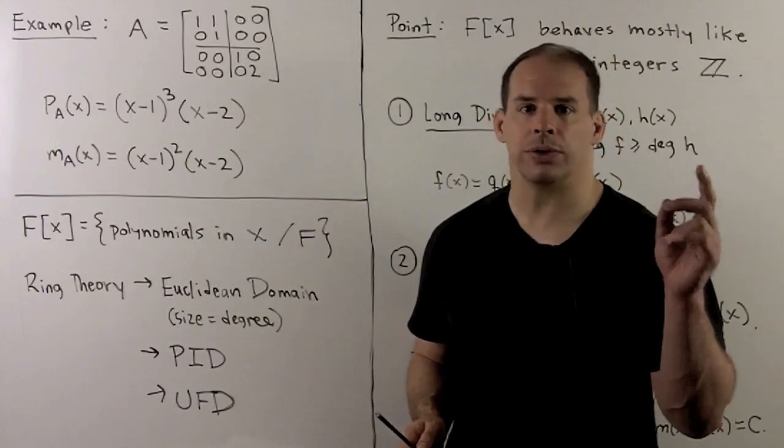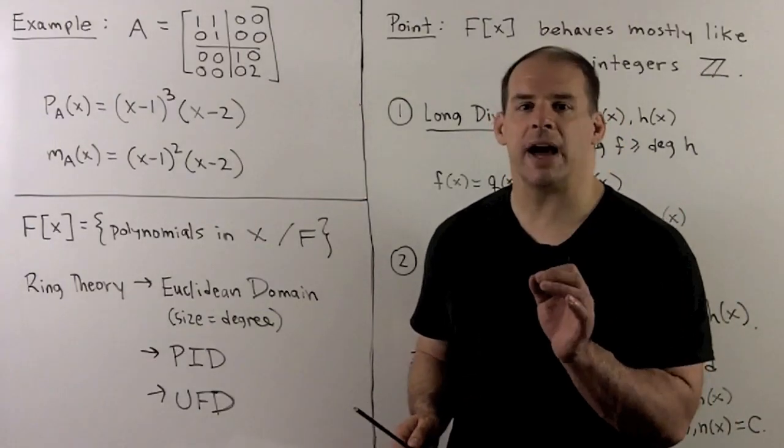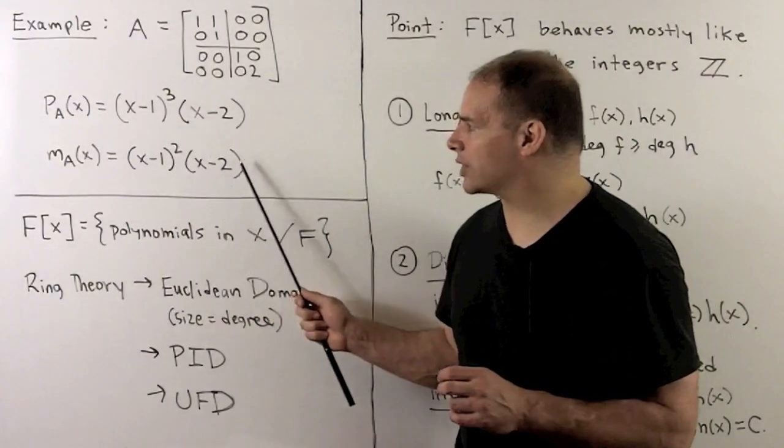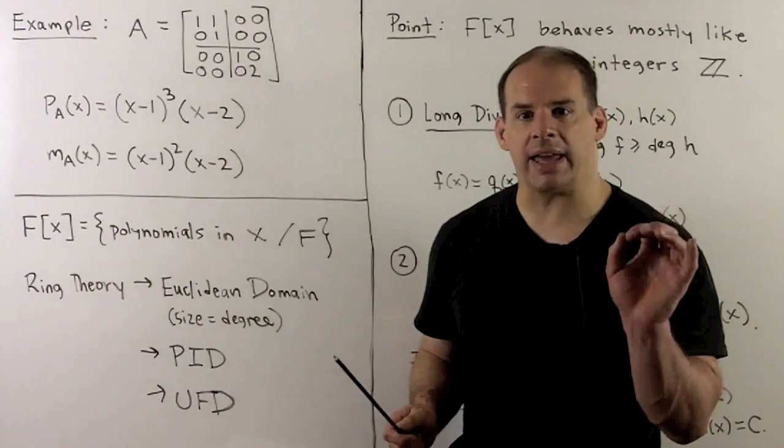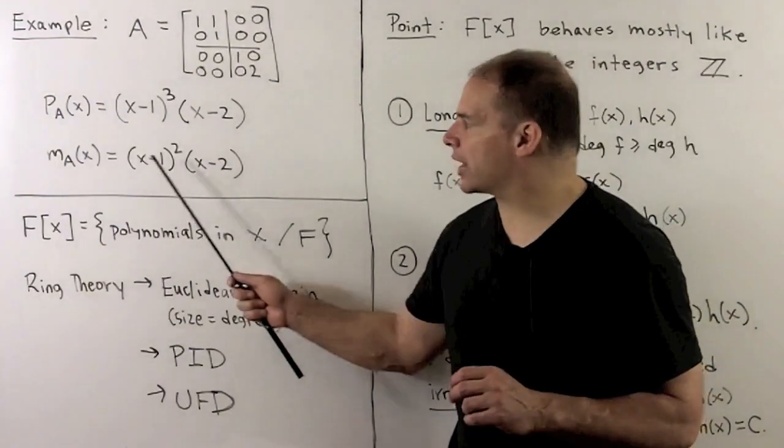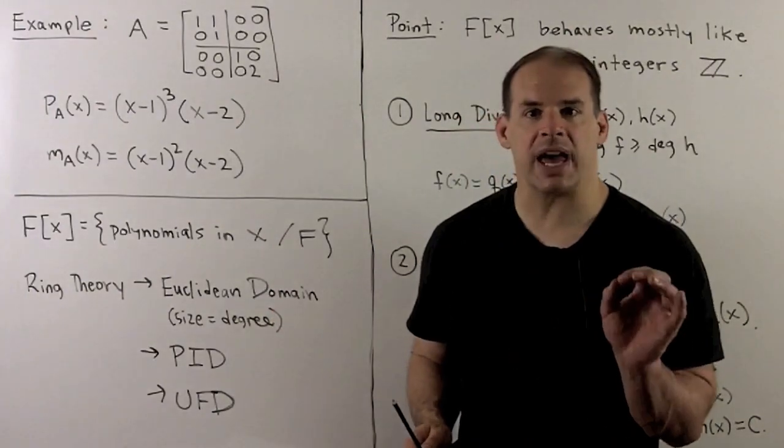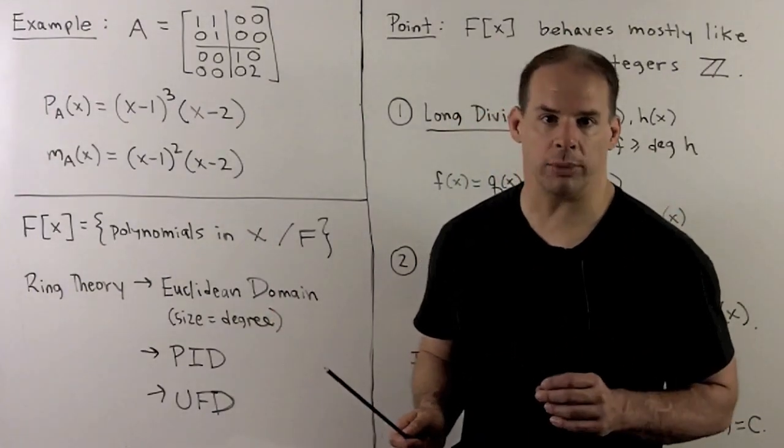Now, it could be one, two, or three. And the only way we find out is by directly checking. So if we check (X minus 1)(X minus 2), zero doesn't come out when we put A in. Zero comes out, and that's our minimal polynomial then.